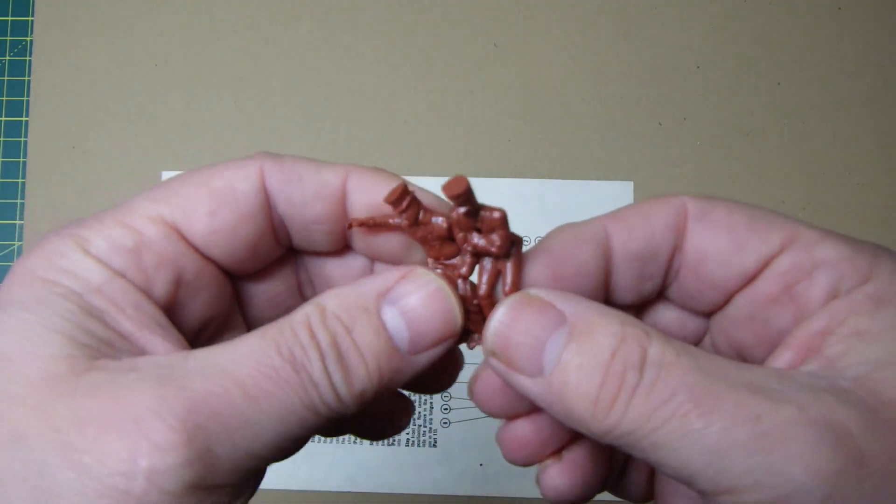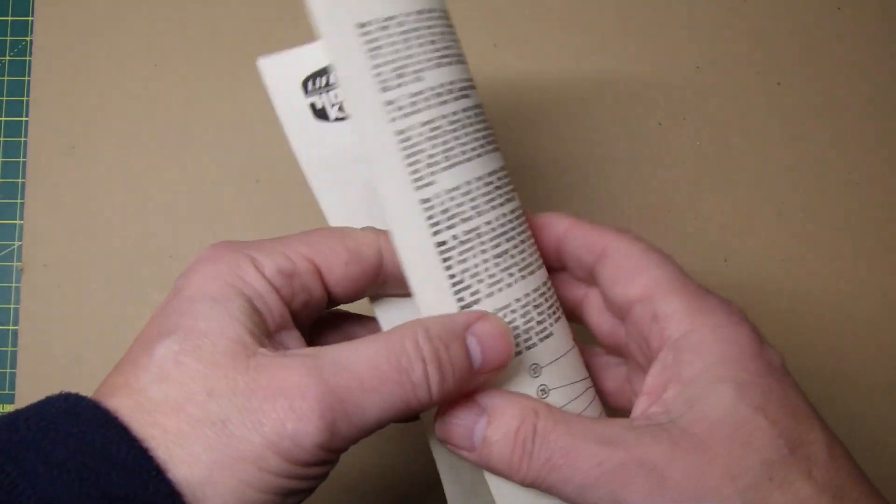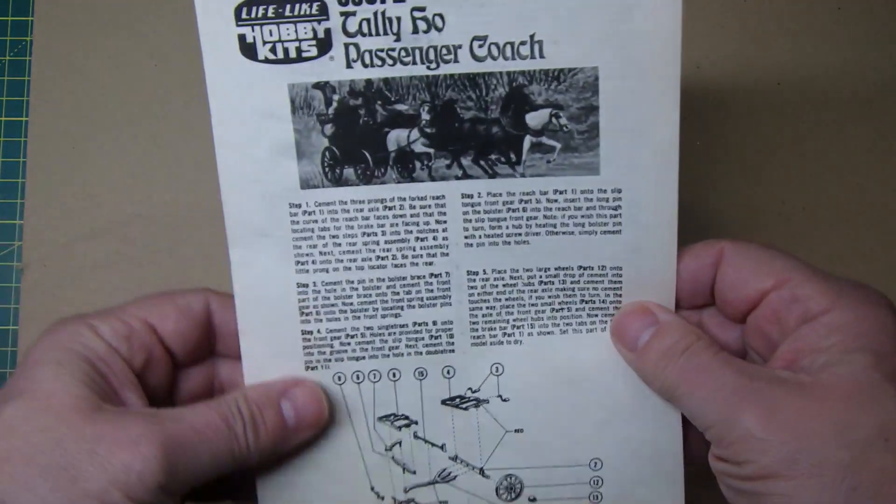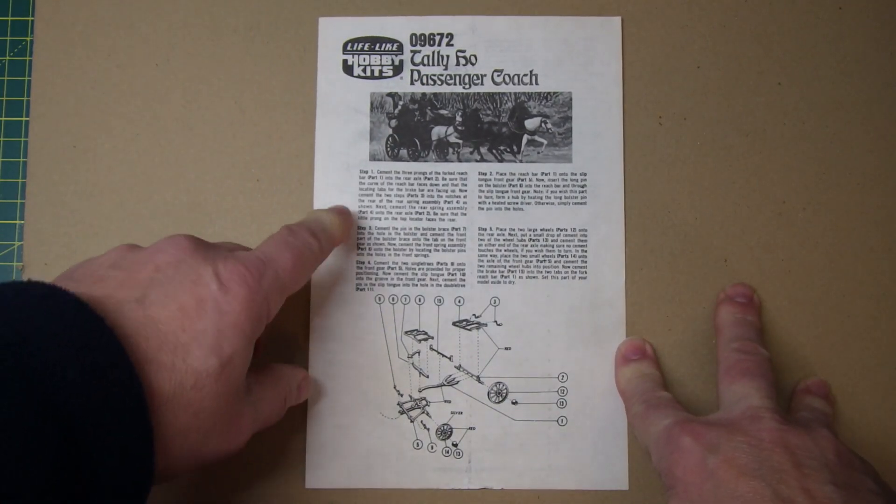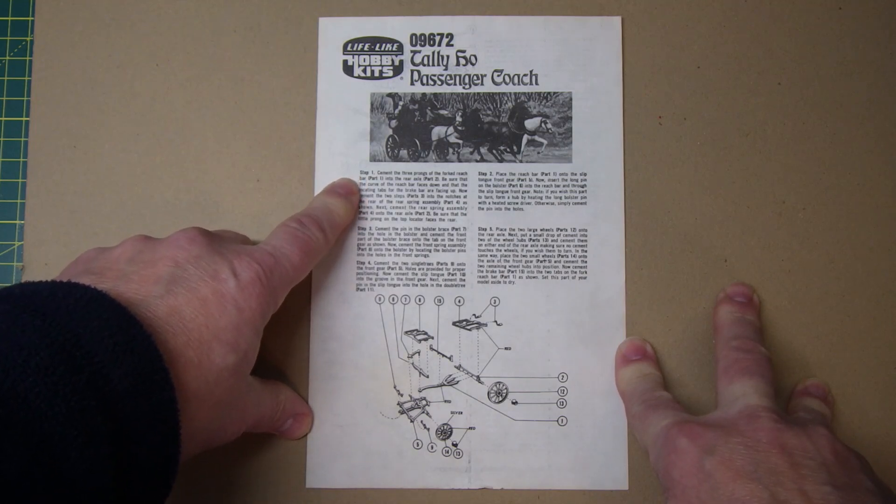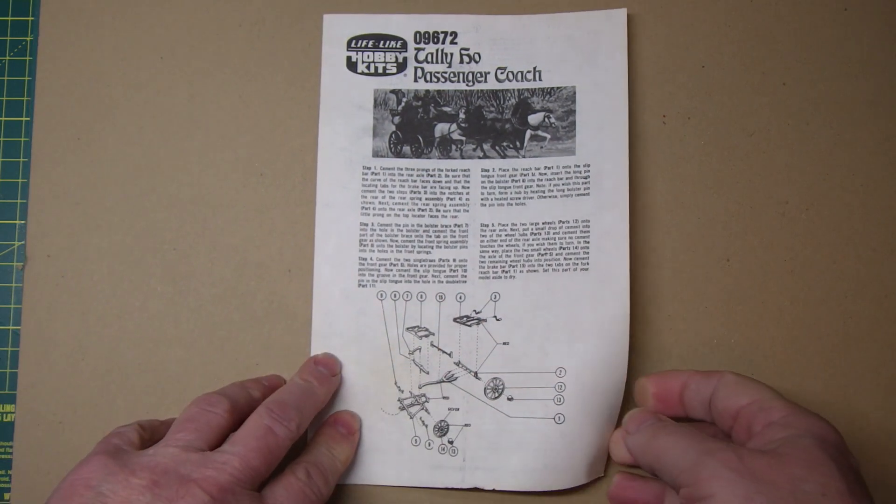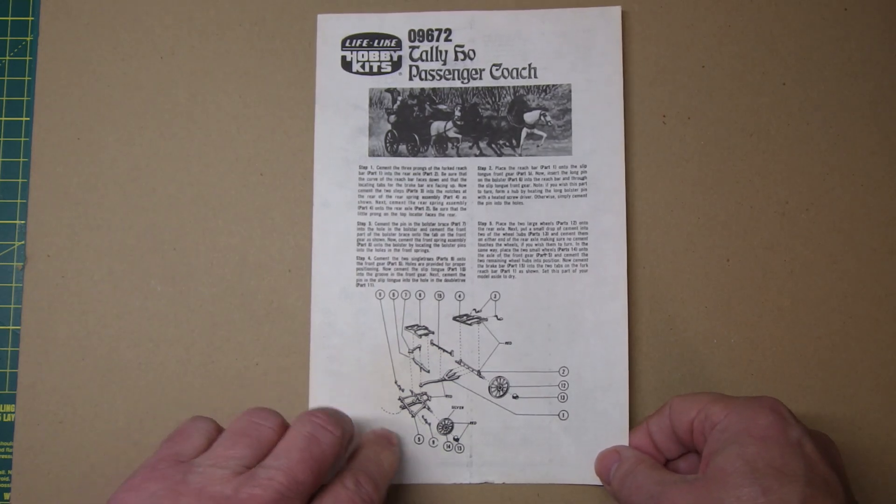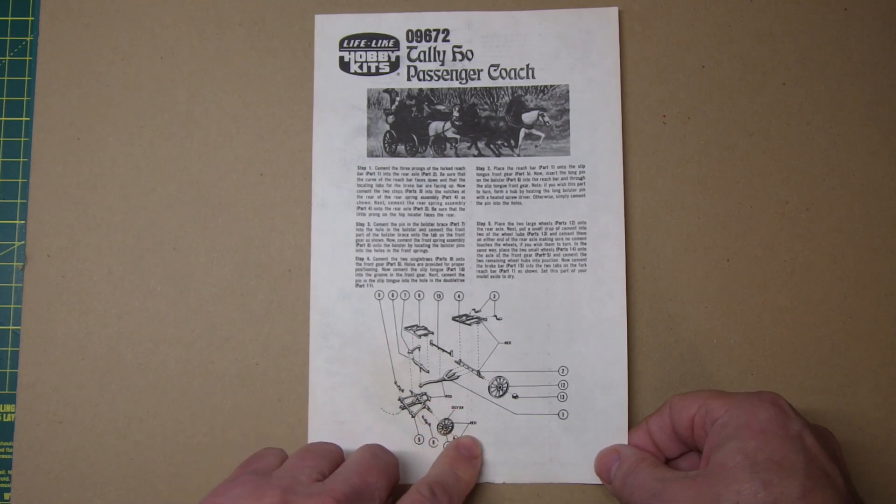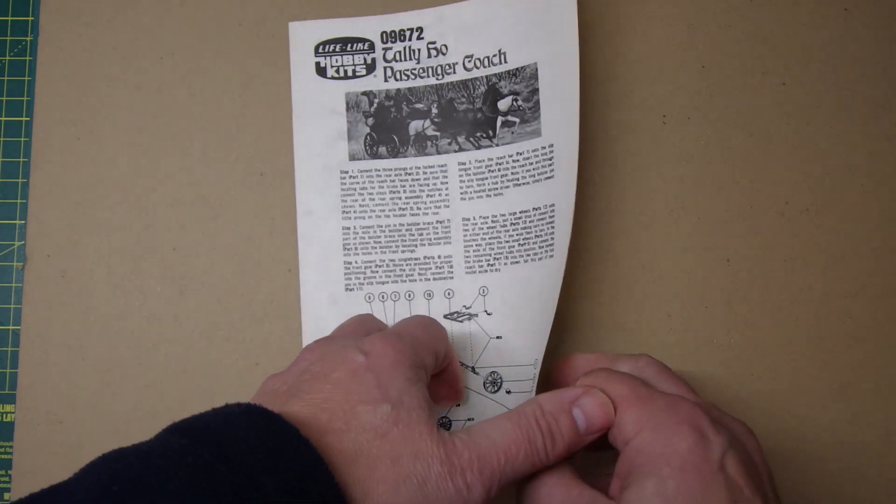Yeah, it's going to be fun painting these figures. Let's have a look at the instructions. Right, so front of the instructions is basically go straight into cement three prongs of the fork to reach bar part one to the rear axle part, blah blah blah. And a blown up diagram of what goes where and also a color call out as well. So that's quite a good thing, so we'll have a look at what the color's like.